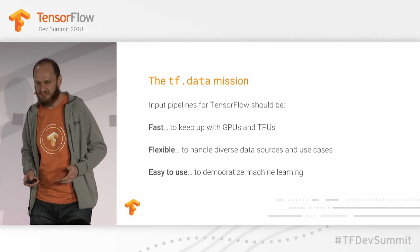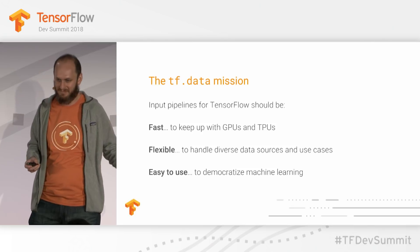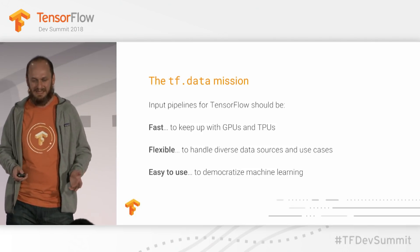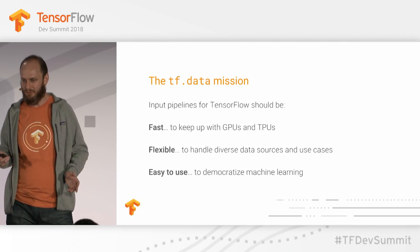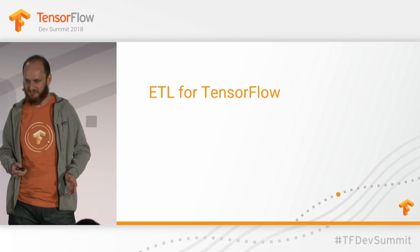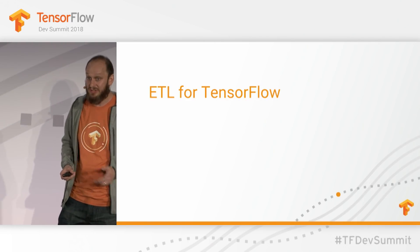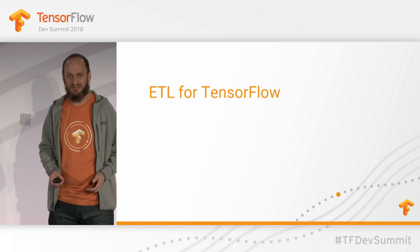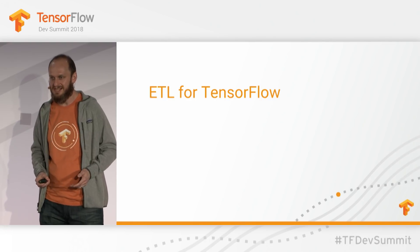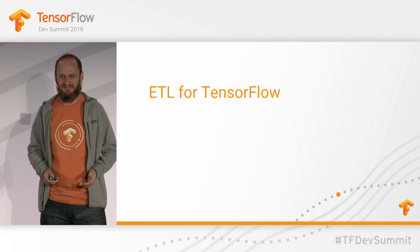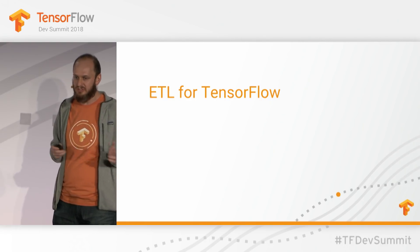I know from spending a lot of time on Stack Overflow that it can be a big leap from following along with your first MNIST tutorial to training your first model on your own data. And a good input pipeline story can help smooth this transition. So we aim to make TF data the only library you need for all input processing in TensorFlow. We took inspiration from the worlds of databases and functional programming languages, and designed TF data as a library of simple, composable tools that we can divide up into three buckets.